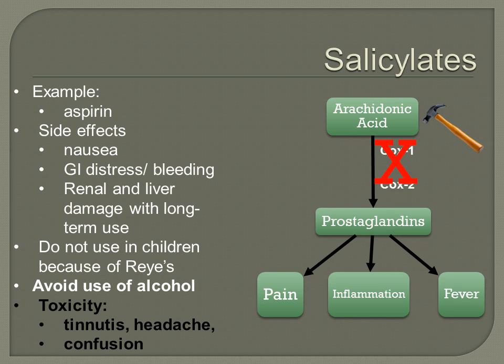Aspirin is used for analgesia for pain, antipyretic for fever, anti-inflammatory for inflammation, and also as an antiplatelet to prevent heart attacks. Since COX is inhibited, we must watch the patient for GI upset and gastrointestinal bleeding. Renal and liver damage can also occur with long-term use, and aspirin is not to be used in children because of the potential for Reye's syndrome. Aspirin toxicity signs are tinnitus or ringing in the ears, headache, and confusion.